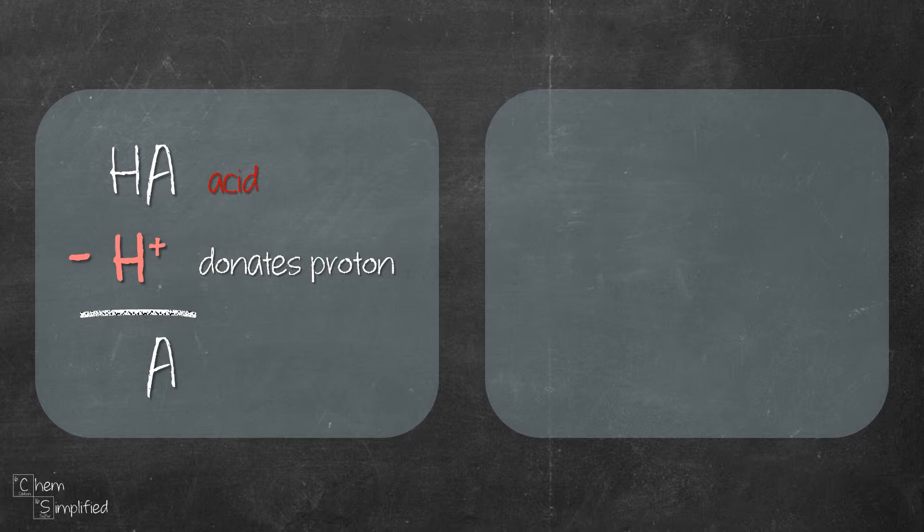Now we will take care of the charge. So we have 0 from HA because it's neutral and then we subtract +1. +1 because that's the charge of a proton. So that will give us 0 minus +1 and that will give us a -1 charge.